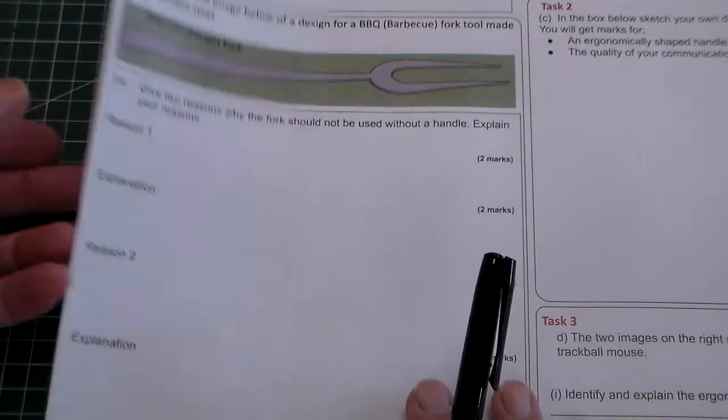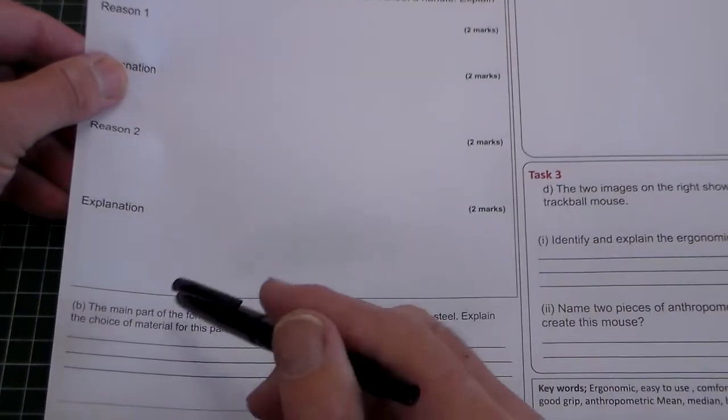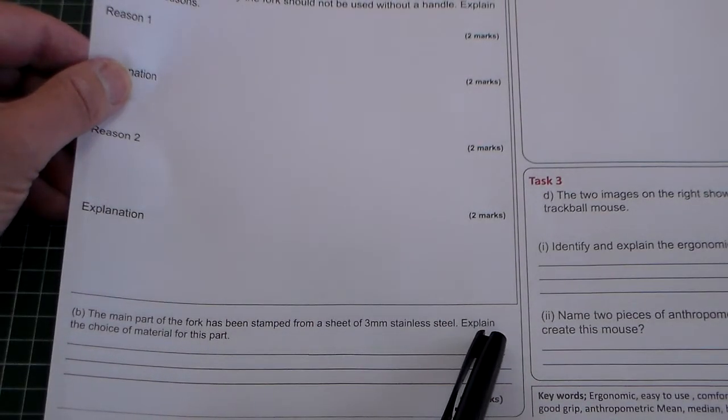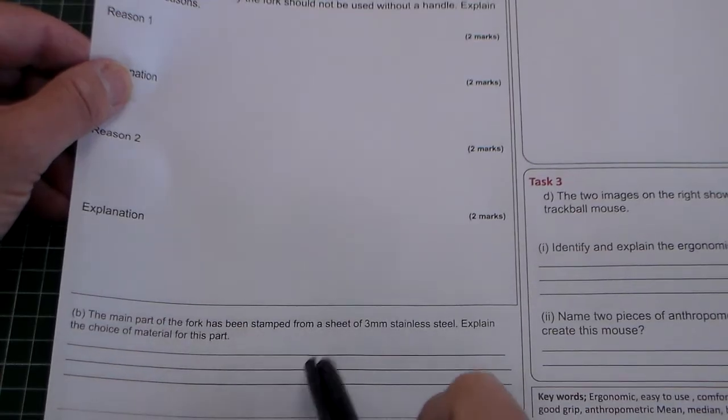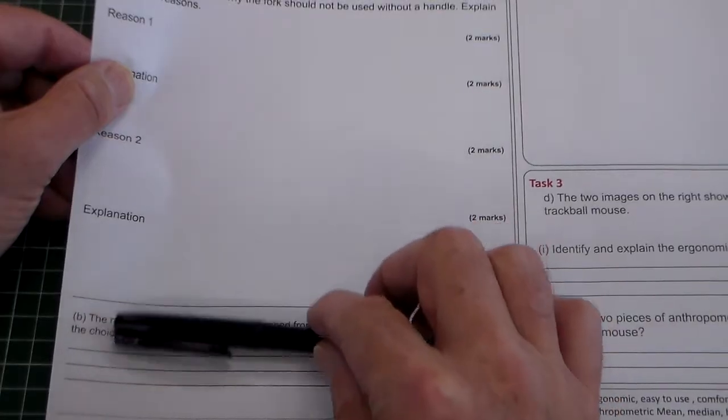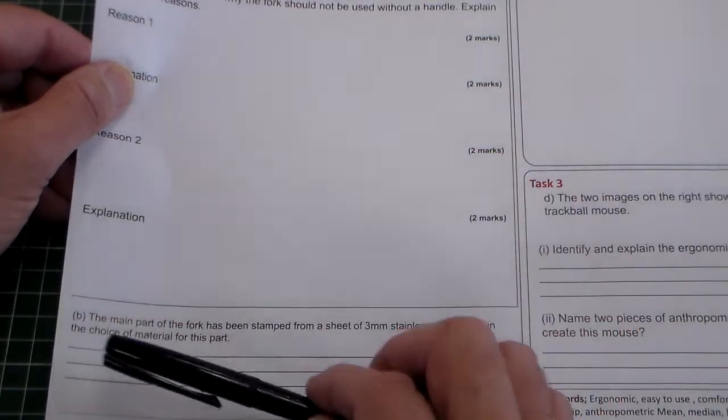If we actually look down here at the bottom, this is sometimes useful to do. It says the main part of the fork has been stamped from a sheet of three millimeter stainless steel. Explain the choice of material for that part. So sometimes it's quite useful to just look down and see the second part of the question where it might give you some more information.